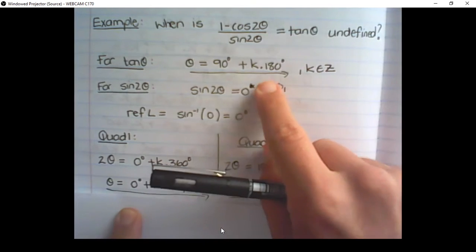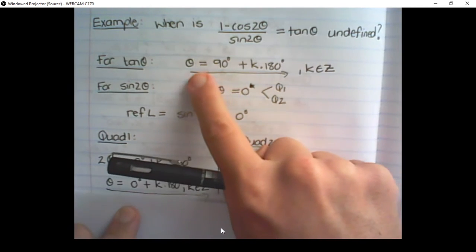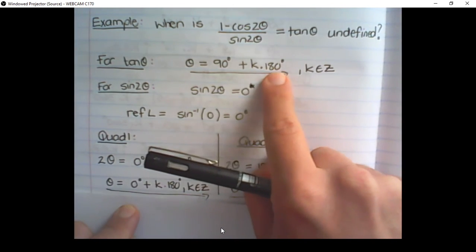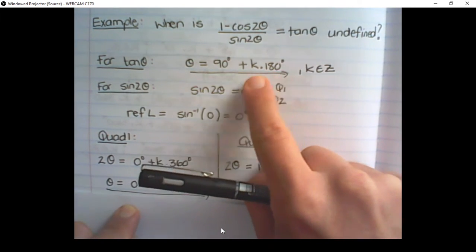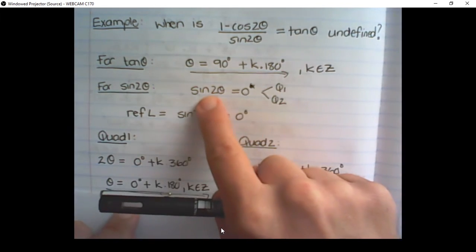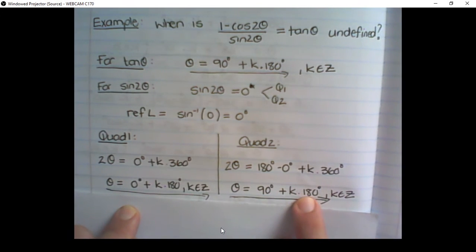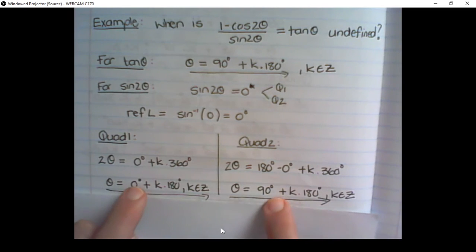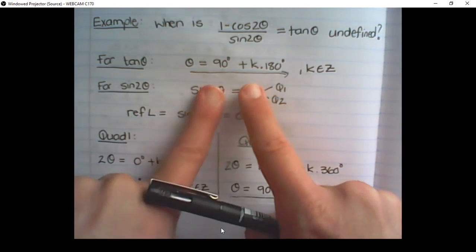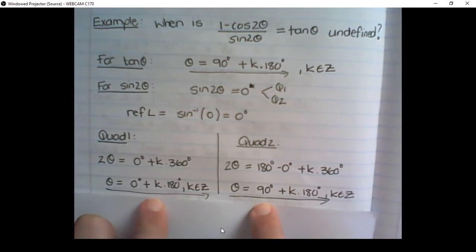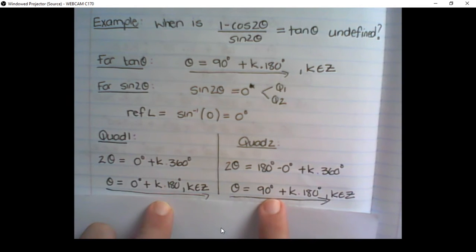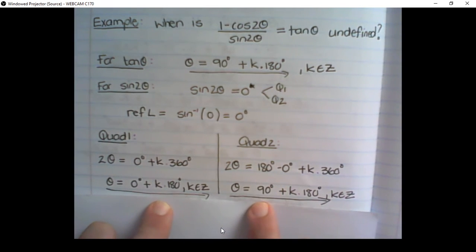You will notice that sometimes the solutions repeat. For tan we have θ equals 90° plus k times 180°, and for sin 2θ we get that same equation repeating. It's important to show what you find and not just assume that something would always repeat.